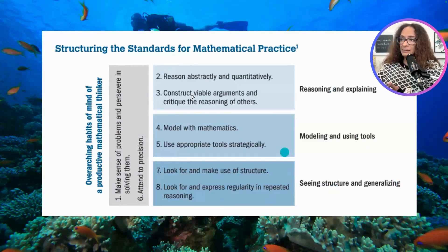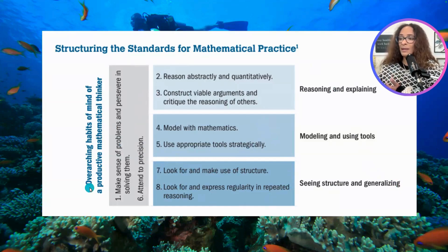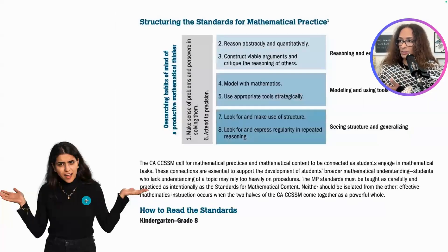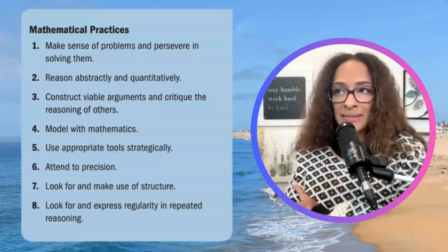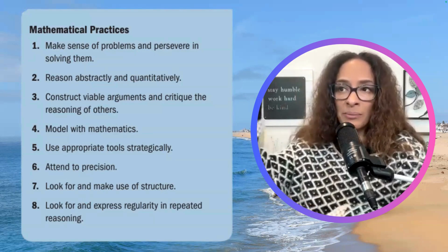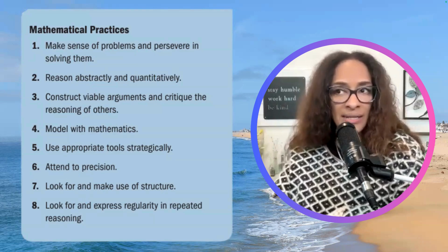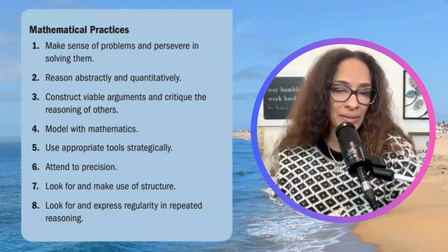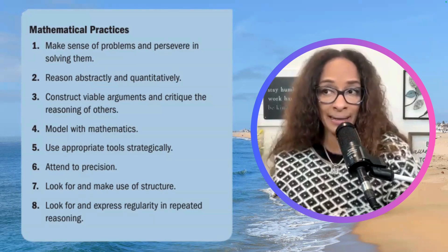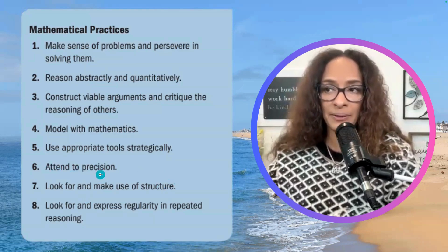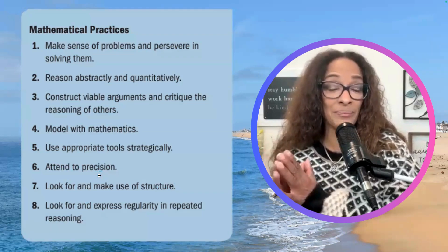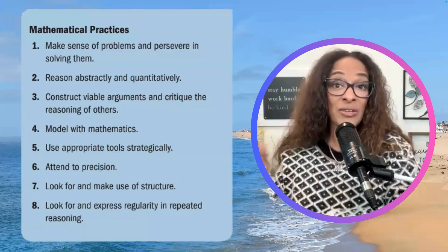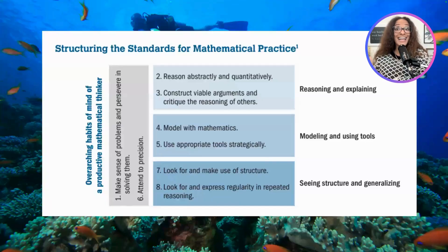Typically when we see these, it can be confusing for many educators. Making sense of the problem and persevering in solving them is number 1, and then numbers 2, 3, 4, 5, 6, and 7 are listed in the order based on the National Council of Teachers of Mathematics, with number 6 down at the bottom. You can see this using the state standards PDF for California, and you'll get both versions.